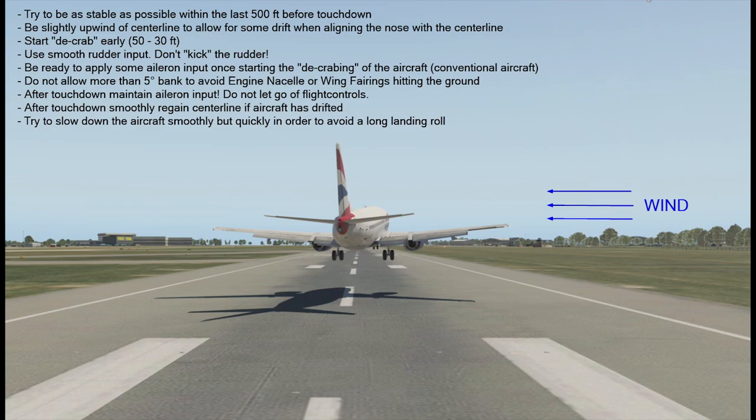After touchdown, maintain aileron input — do not let go of the flight controls. Quite often pilots relax and release the controls after a crosswind landing, so try to avoid that. Maintain positive aileron input if you had it during the flare and touchdown. If the aircraft drifts off the centerline, regain it smoothly. Then slow down the aircraft smoothly but quickly — do not attempt a long landing rollout, especially at high speeds, because gusty crosswind conditions make it difficult to control the aircraft even on the ground.